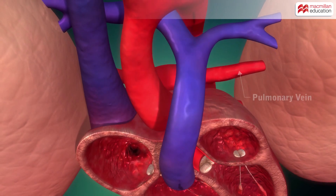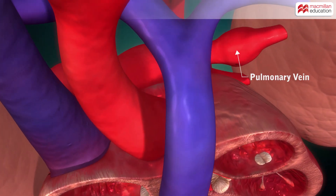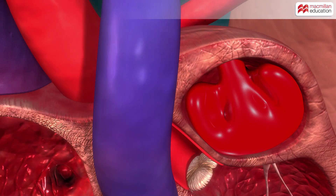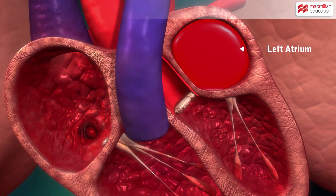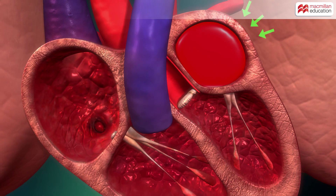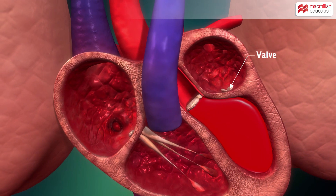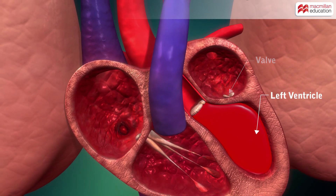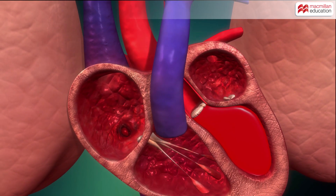Oxygen-rich blood then passes through the pulmonary veins and reaches the left atrium. On receiving the oxygen-rich blood from the pulmonary veins, the left atrium contracts, pushing the blood through the valve into the left ventricle.